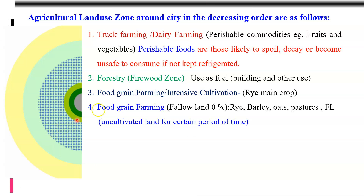Zone number four is food grain farming with fallow land. Fallow land means uncultivated land kept so for a certain period of time. When land is cultivated continuously for a long period, the fertility of the soil decreases. To retain and sustain fertility, the land must be kept uncultivated for some period — that land is known as fallow land. In zone four, fallow land is present. The major crops cultivated in this zone were rye, barley, oats, and fodder, which is important for livestock.